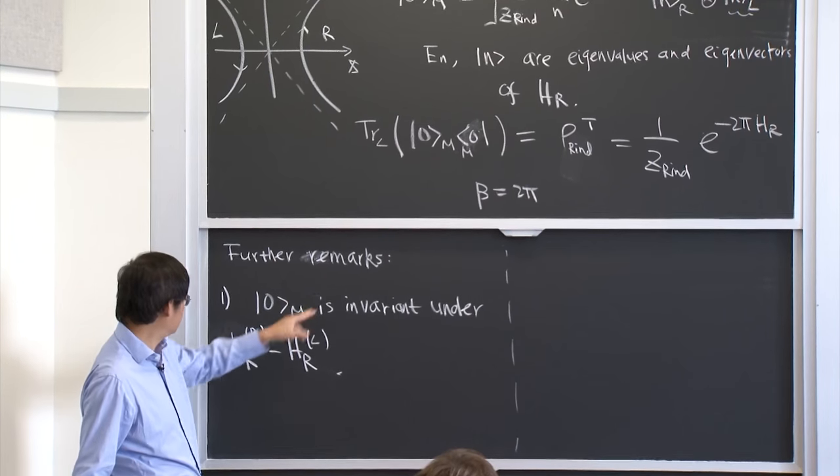Q: How are we defining temperature here? A: We define it in terms of the density matrix. If you have a density matrix of the form ρ = (1/Z) e^{-βH}, where Z = Tr(e^{-βH}), then you say the temperature is 1/β. This defines a canonical ensemble, and 1/β is the temperature. That's how we define temperature in quantum statistical physics.